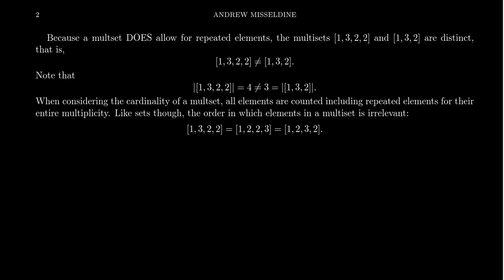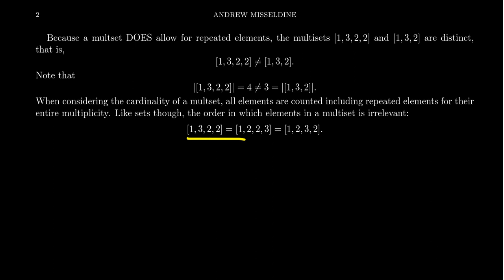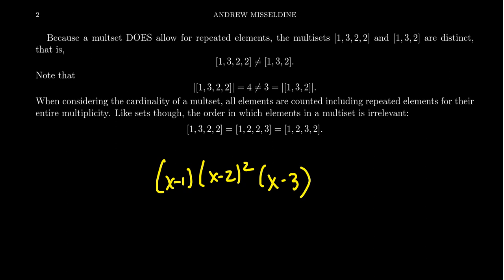Like sets, multi-sets are not ordered — the arrangement of elements does not make a difference. So [1, 3, 2, 2], [1, 2, 2, 3], and [1, 2, 3, 2] are all the same multi-set, because they have three distinct elements: 1 appears once, 2 appears twice, and 3 appears once. You could think of this multi-set as the roots of the polynomial (x−1)(x−2)²(x−3), where 2 shows up twice — that is a distinguishable aspect of this multi-set.